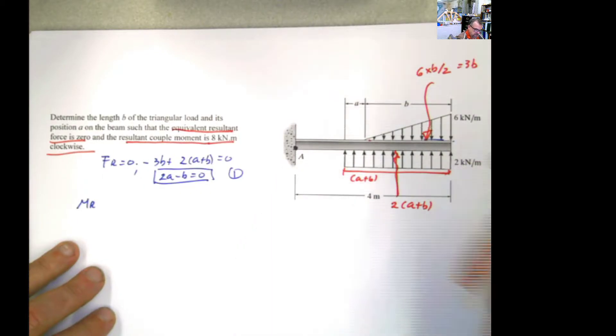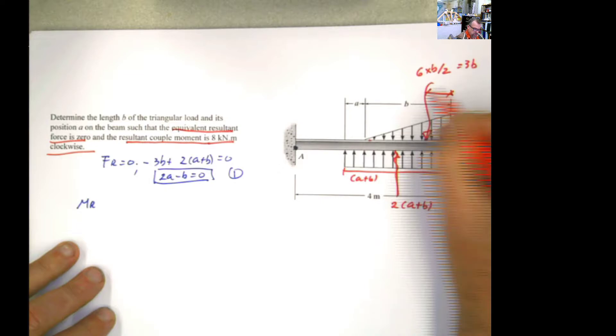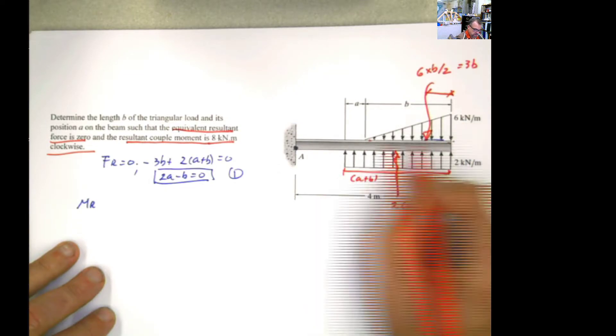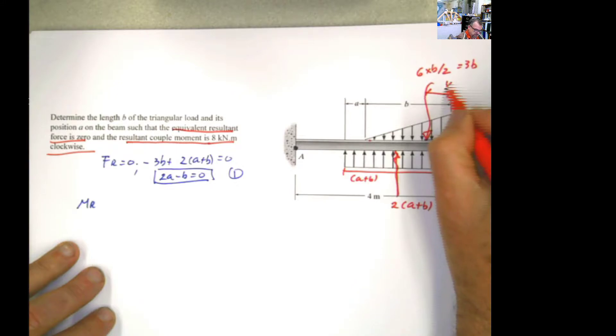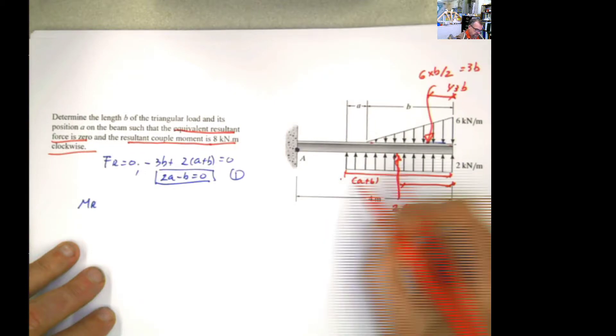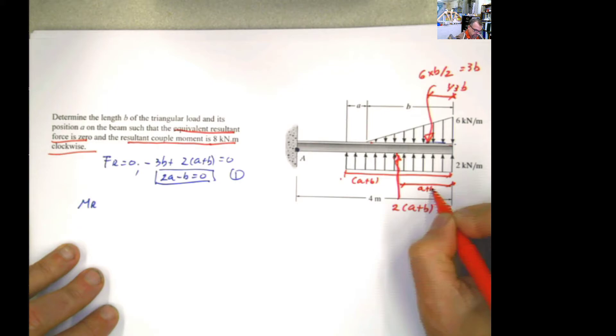So let's find the location of the forces. I know that in a triangle, the location of the concentrated load is going to be 1 third of the base from the right angle. So this distance is b, 1 third of b. And for the rectangle, it's at the center. So from this end or from this end, it's going to be half of the base, a plus b divided by 2. That's going to be the distance.